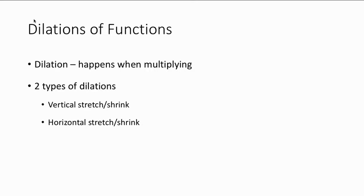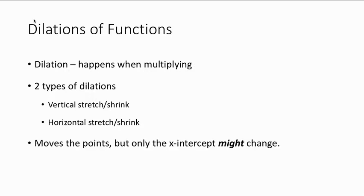There are two types of dilations: vertical stretches or shrinks, and horizontal stretches or shrinks, where a shrink is just a compression. This moves the points, but really only the x-intercept might change, and it doesn't every time. With a dilation, this is not going to be any type of reflection. Though you can have both a dilation and a reflection, the dilation part itself does not change any end behavior. It doesn't change the domain, it doesn't change the range, and sometimes it doesn't even change the x-intercept.